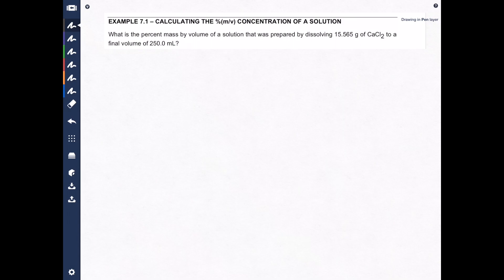What is the percent mass by volume of a solution that was prepared by dissolving 15.565 grams of calcium chloride to a final volume of 250.0 milliliters?